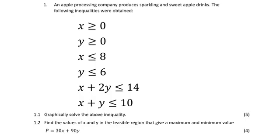Why are those default inequalities always there? Because we will be dealing with number of items, and we only deal with whole numbers. Remember from level 2, a set of whole numbers starts from 0. So you are not going to have negative values for X, and you are not going to have negative values for Y. By default we will only deal with X greater than or equal to 0 and Y greater than or equal to 0. The first two inequalities are by default, so what we are going to plot are the four remaining inequalities.